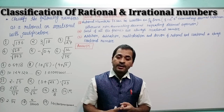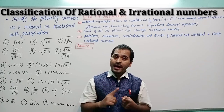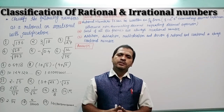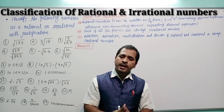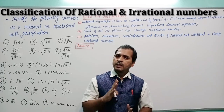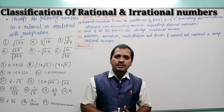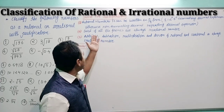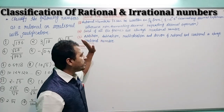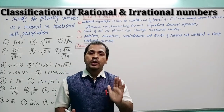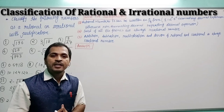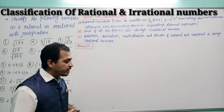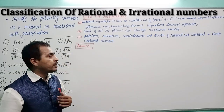Third point: the square root of all prime numbers is always irrational. So these are the three key points which will help you classify rational and irrational numbers. Now we are starting the examples.